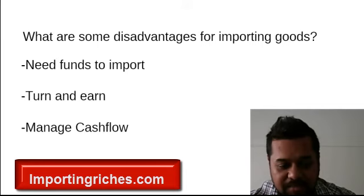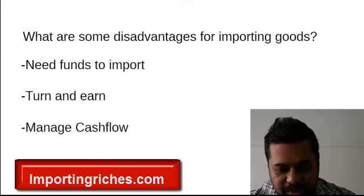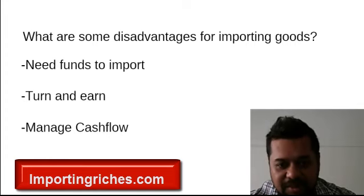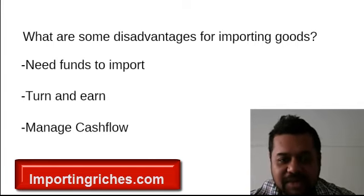If the items you're importing are fairly big — we imported steam mops and stuck them in the garage — when that got too much, we used storage units. Storage units run anywhere from $250 to $550 a month, but we could fit a 40-foot container's worth of stuff in there, so it was all relative. But you need to manage your cash flow, because if you've got overheads you can run into trouble.